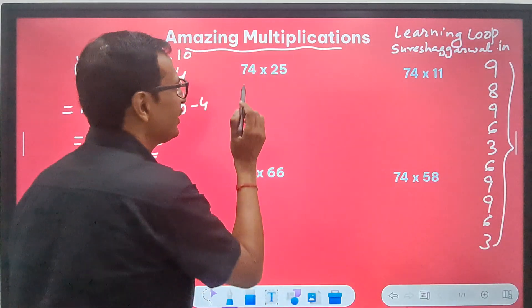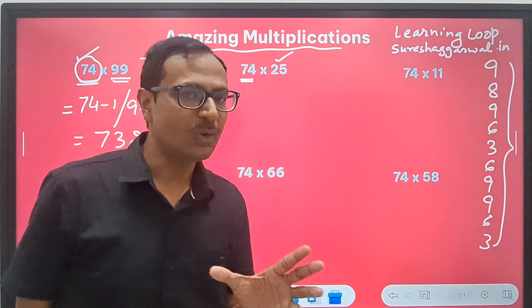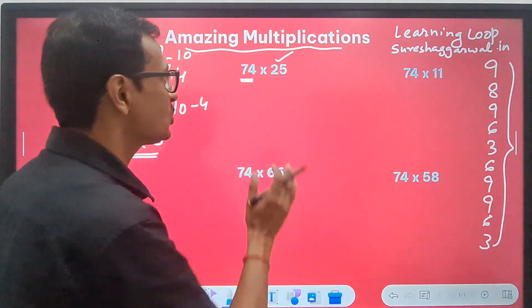Let's have another one. We are multiplying the same number by 25 now. 25 is actually a quarter, right? Quarter of what? Quarter of 100.